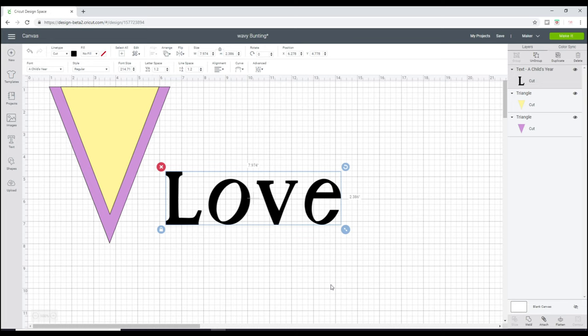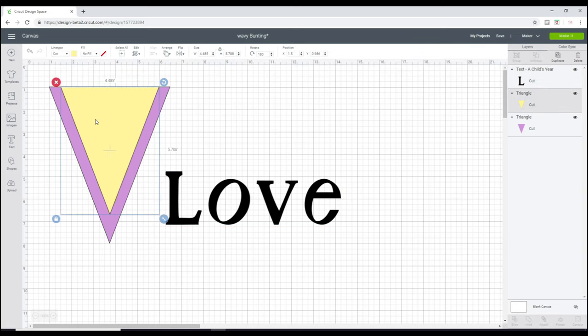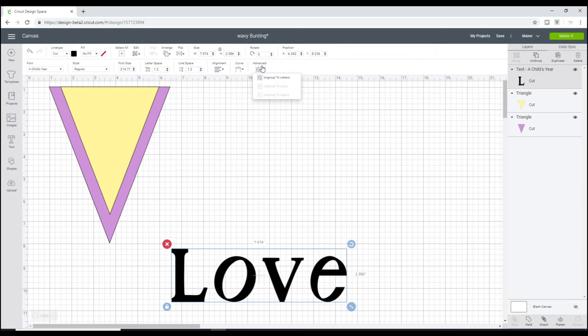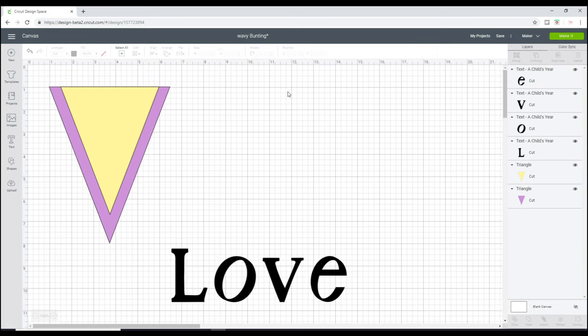We're going to be using fabric, we're going to use cotton, we're going to make some bunting, and I'm going to be using iron-on as well. I've got two triangles here and I've got my text here. This is just a child's year font.